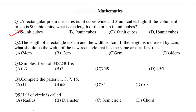Question 2: the length of a rectangle is 6 cm and width is 4 cm. If the length is increased by 2 cm, what should be the width of the new rectangle that has the same area as the first one? The correct option is option C, 3 cm.